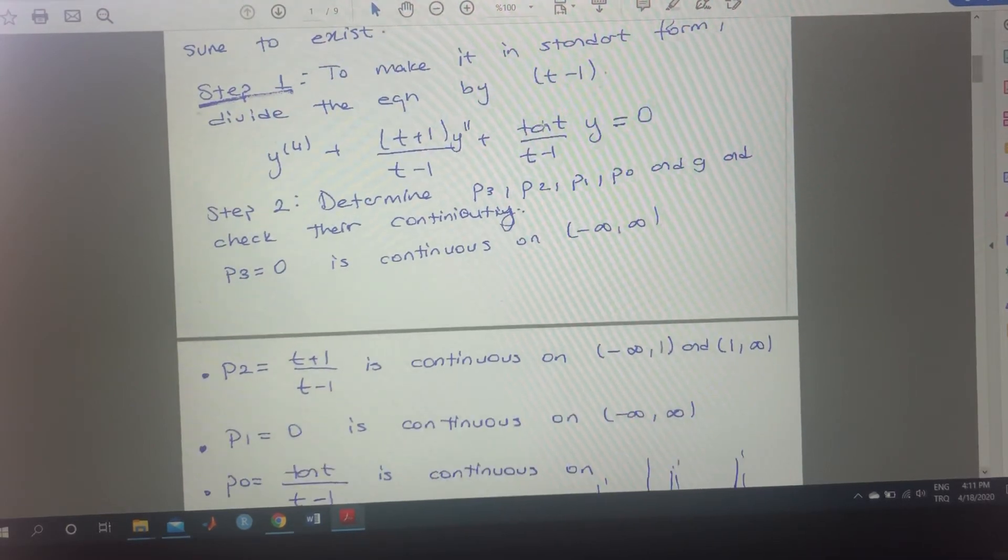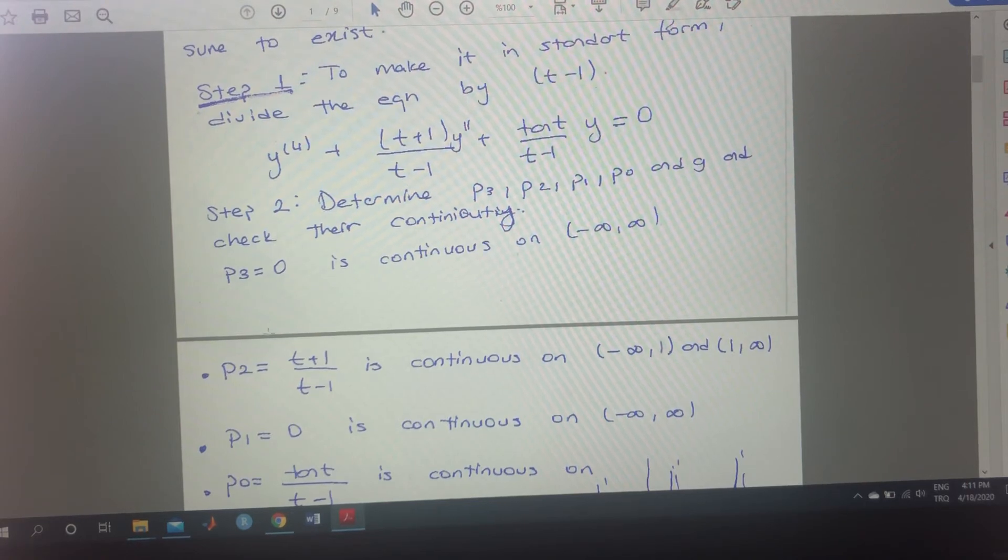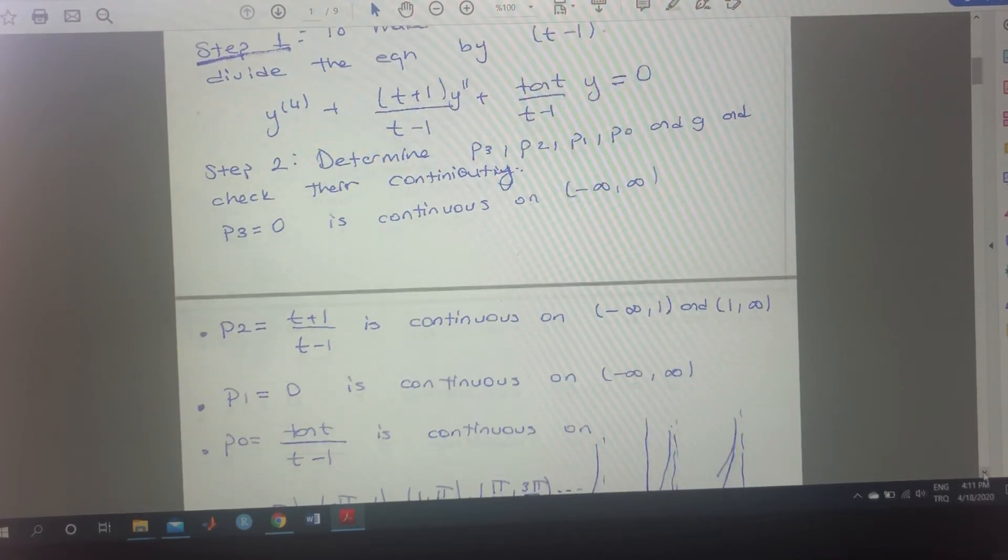What is p2? p2 in this case, t plus 1 over t minus 1. That's why here this is p2. And it's continuous everywhere other than 1, right? The denominator cannot be 0. That's why I'm writing the interval is minus infinity to 1, 1 to infinity. 1 is not included.